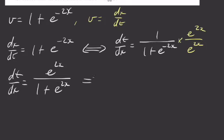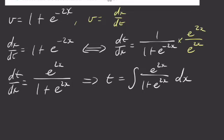And this means that t is equal to the integral of e to the 2x over 1 plus e to the 2x dx. And this is my anti-differentiation. So I'm going to anti-differentiate this and I'm going to do that with a u substitution.